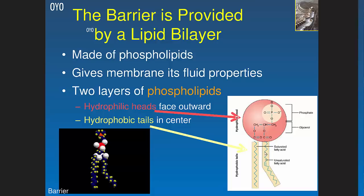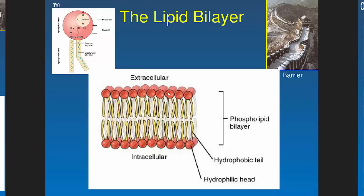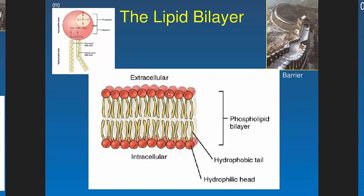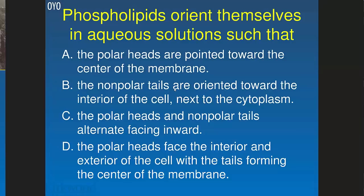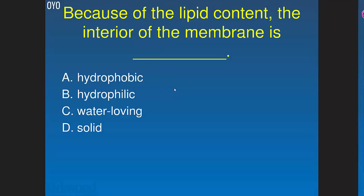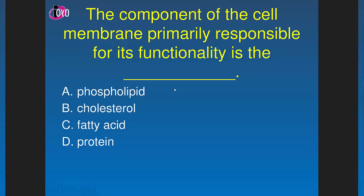The phospholipid bilayer structure in detail: the head is hydrophilic — it has charges and likes to interact with water. The tail is hydrophobic — it does not like water. Arranged in a bilayer, the polar heads face outward and the non-polar tails face inward, creating a barrier. Water molecules don't easily pass through because they don't want to go through the non-polar region, and non-polar things also struggle to get through the polar area. The polar heads face the interior and exterior of the cell while the tails form the center of the membrane.